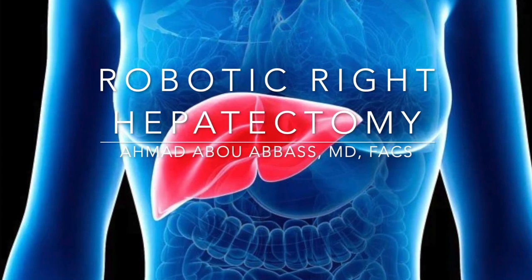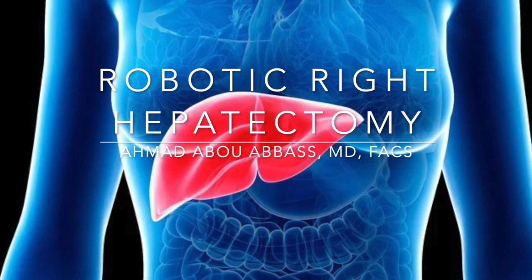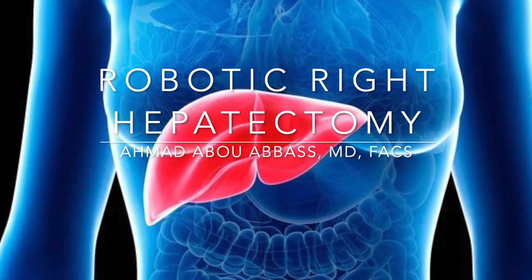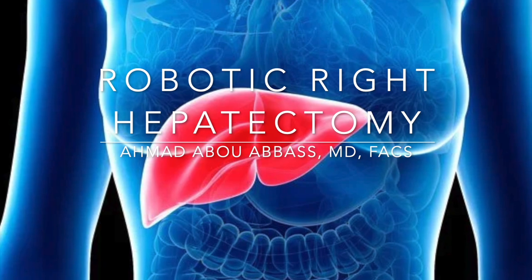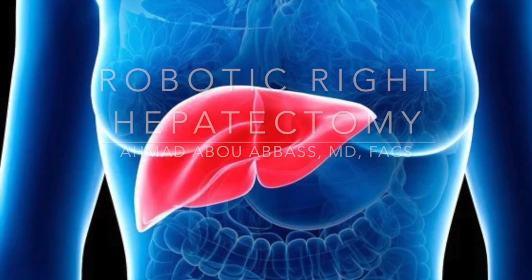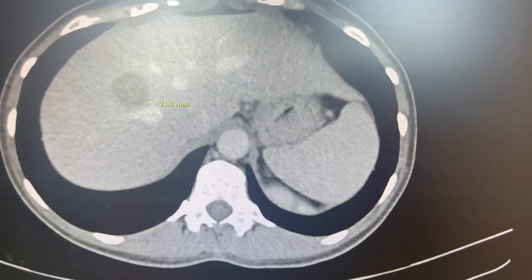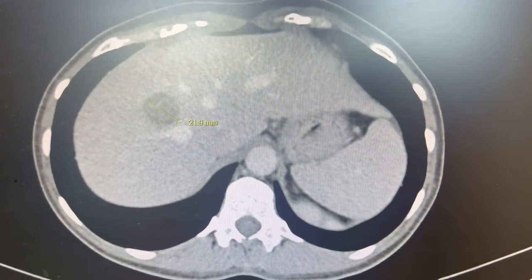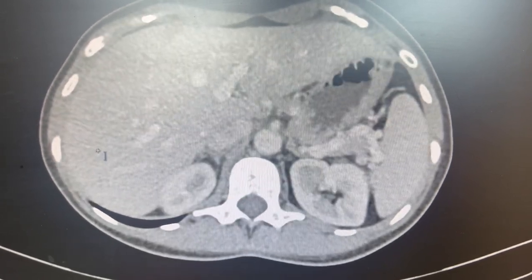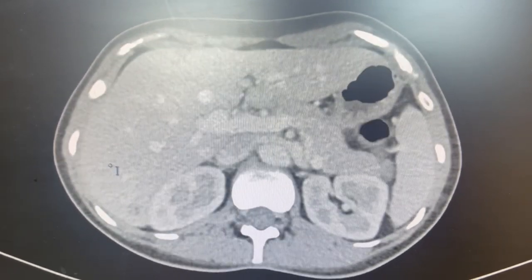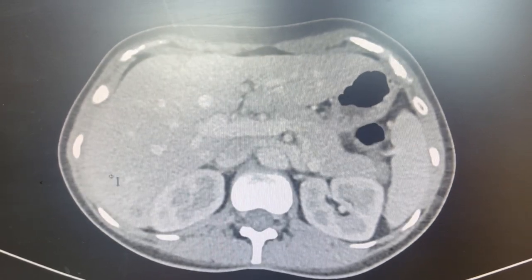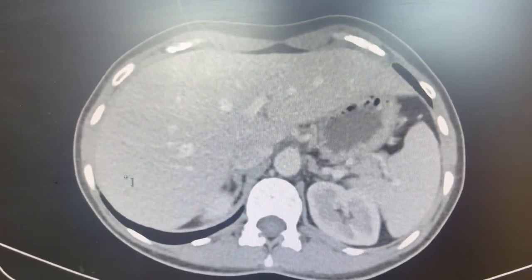This is a robotic right hepatectomy for colorectal liver metastases in a 40-year-old female who was diagnosed with rectal cancer and had multiple liver mets. There were four in the right lobe and one in the left segment. Patient underwent chemotherapy — this is pre-chemo. All the tumors shrunk but were still persistent. She also had an MRI that didn't show any other lesions.